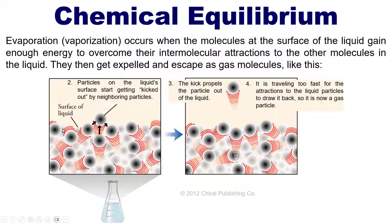Vaporization occurs when the molecules at the surface of the liquid gain enough energy to overcome their intermolecular attractions to the other molecules in the liquid. They then get expelled and escape as gas molecules. This figure, taken from a text written by Mark Bishop (referenced in the description below), shows how surface particles of a liquid eventually get kicked out by their neighbors. That kick propels the particle out of the liquid, at which point it's traveling too fast to experience any intermolecular attractions to the rest of the molecules it came from — thus converting from a liquid to a gas.